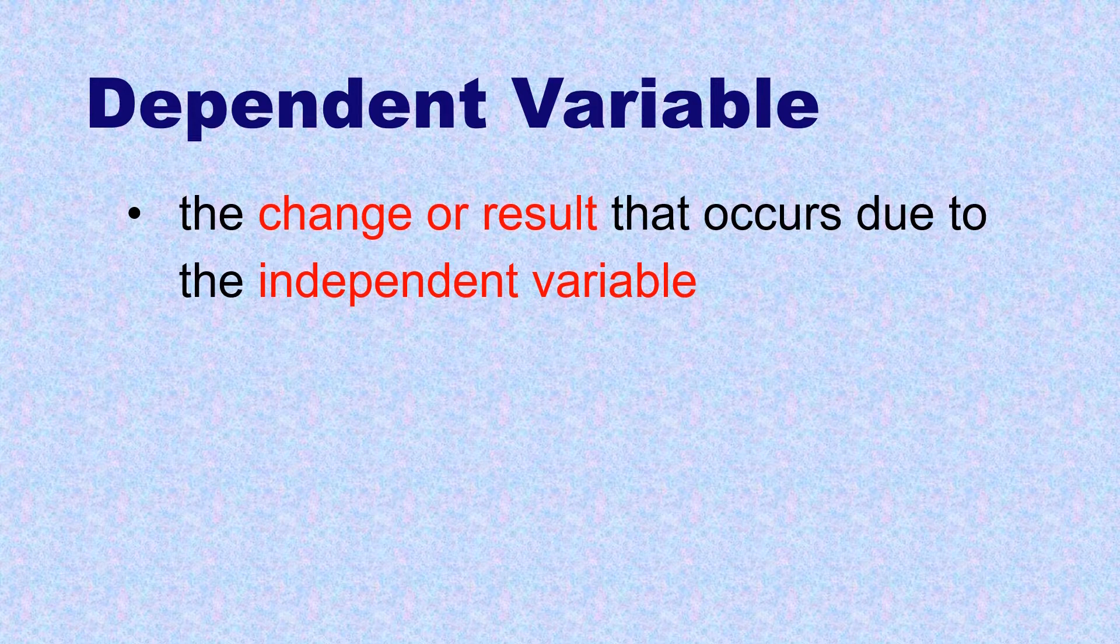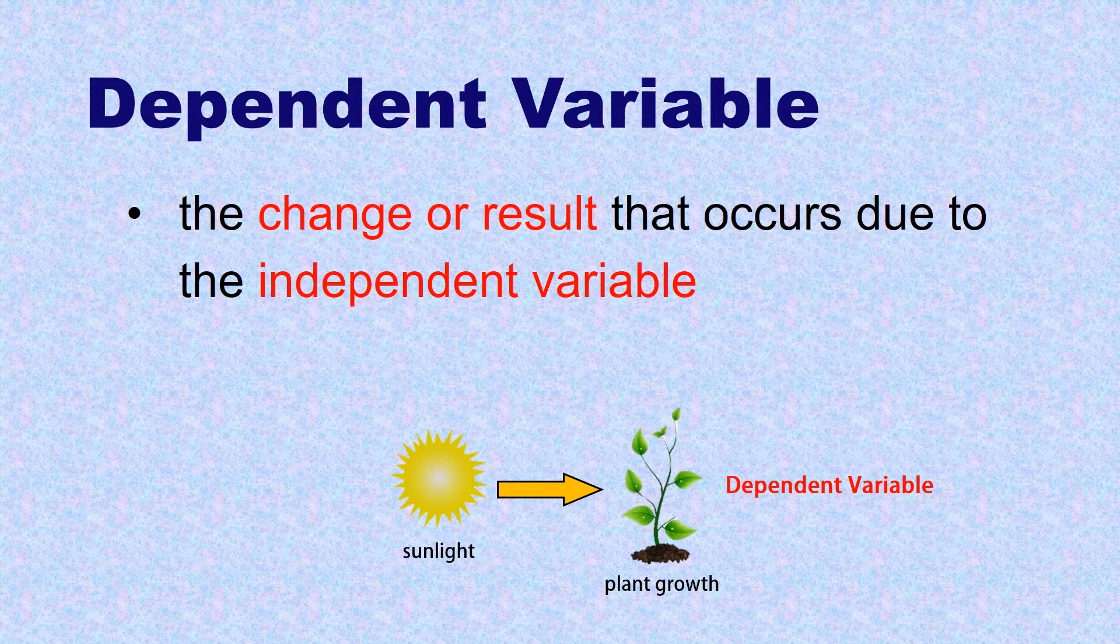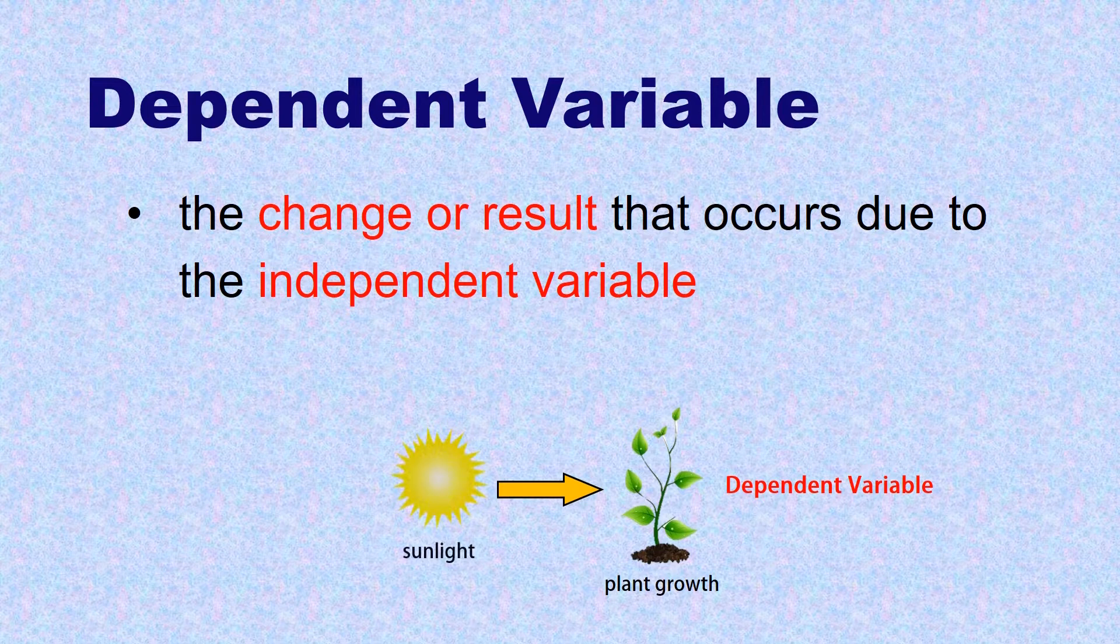if the experiment is about the effect of sunlight on plant growth, the dependent variable here is the plant growth because whether the plant will grow faster or not depends on sunlight. Sunlight on the other hand is the independent variable.